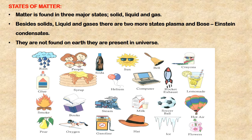States of Matter. Matter is found in three major states: solid, liquid, and gas. Besides these, there are two other states of matter called plasma and Bose-Einstein condensate. They are not found on Earth — they are present in the Universe.